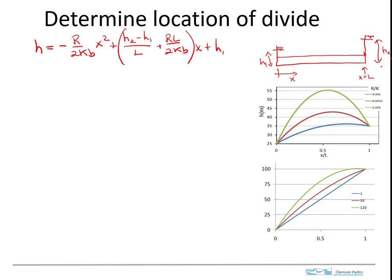In this video, I want to show you how to determine the location of a divide where we have a confined aquifer shown schematically here. The thickness of the aquifer is B, the hydraulic conductivity is K, and the heads at the two ends of the aquifer are H1 and H2.